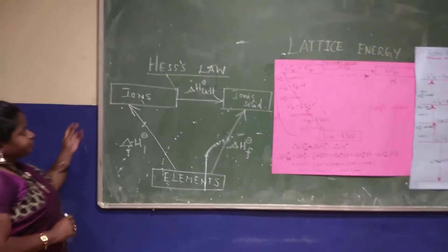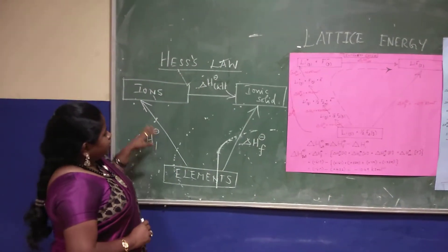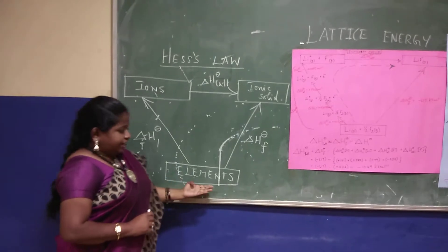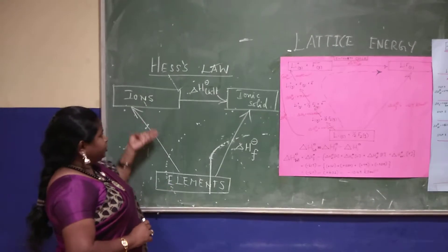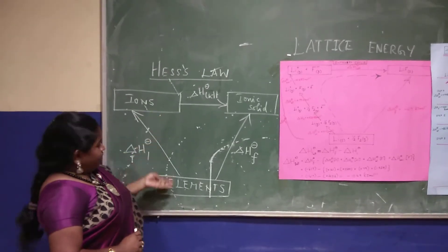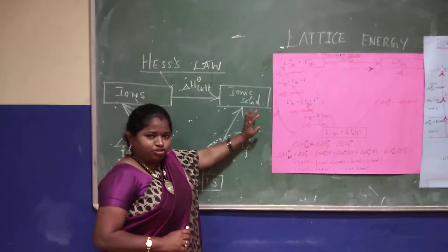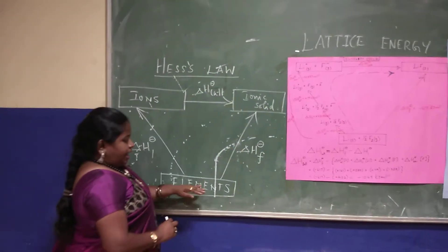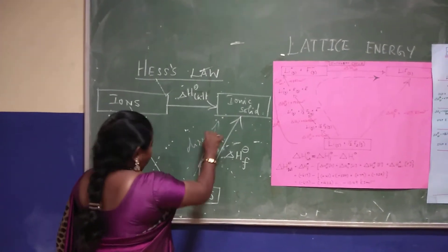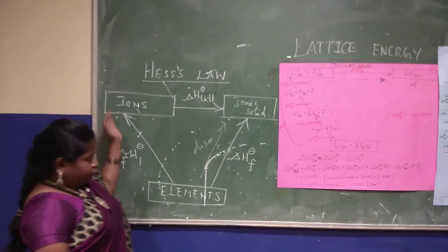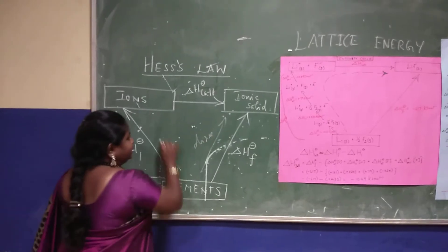The basic concept here is Hess's Law. Whatever elements are going to react, from those elements you need to get the ions. You will get the gaseous ions, and from gaseous ions only you will get the ionic solid. So elements to ionic solid is a direct way, and going through ions to get the ionic solid is an indirect way.